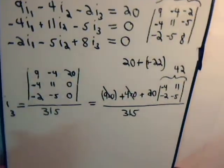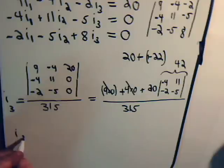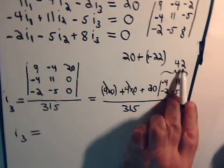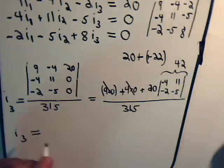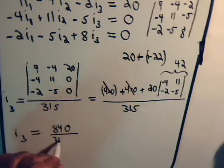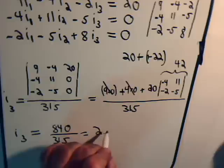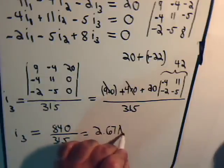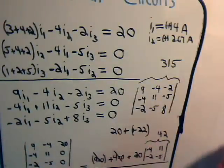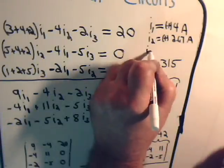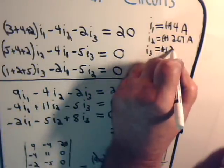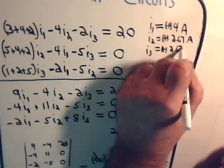So we have I3 equals plus 20 times 42. 840 again. Divided by 315. And we just did that. That's plus 2.67 amps. So I3 is also plus 2.67 amps.